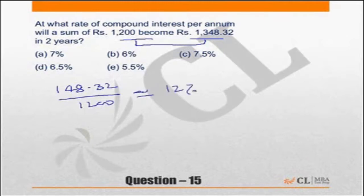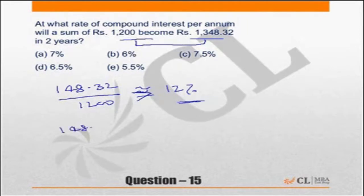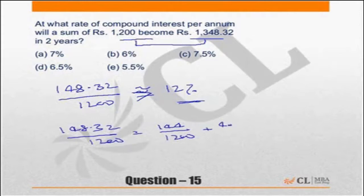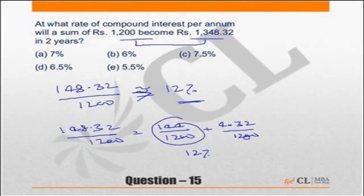This is compounding. Two successive increments of the chosen rate give slightly more than 12 percent — it is more than 12 percent, approximately equal but more than 12 percent, because 148.32 upon 1200 equals 144 upon 1200 plus 4.32 upon 1200. That is 12 percent, and 1 percent of 1200 is 12, so this works out to approximately 12.35 percent.